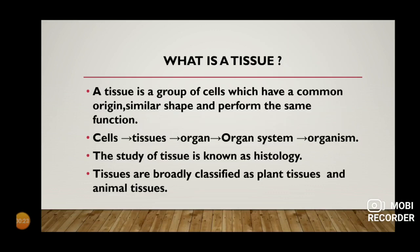First thing: what is a tissue? In the first chapter we read about the cell — the cell is the structural and functional unit of life. Tissue is a group of cells that have a common origin, similar shape, and perform the same function.